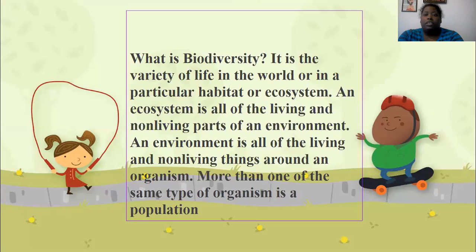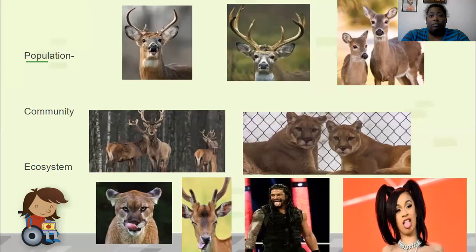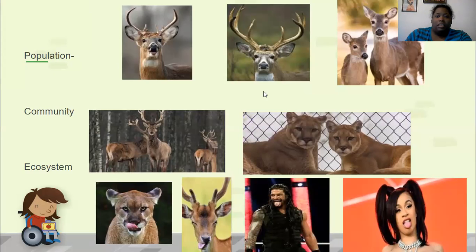So what is biodiversity? It is the variety of life in the world or in a particular habitat or ecosystem. An ecosystem is all of the living and non-living parts of an environment. The living parts would be called the biotic factors, and the non-living would be the abiotic parts.